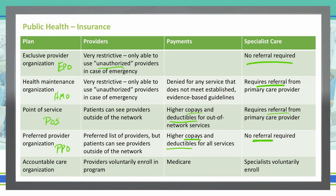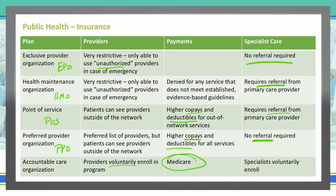Finally, we have the Accountable Care Organization, or ACO. These are groups of doctors that have voluntarily enrolled in these particular programs, which are specifically associated with Medicare. Doctors, hospitals, and other healthcare providers have voluntarily come together to give coordinated care to patients on Medicare. Specialists also voluntarily enroll in this program, so you do not need a referral — you just have to go to one of the approved specialists.